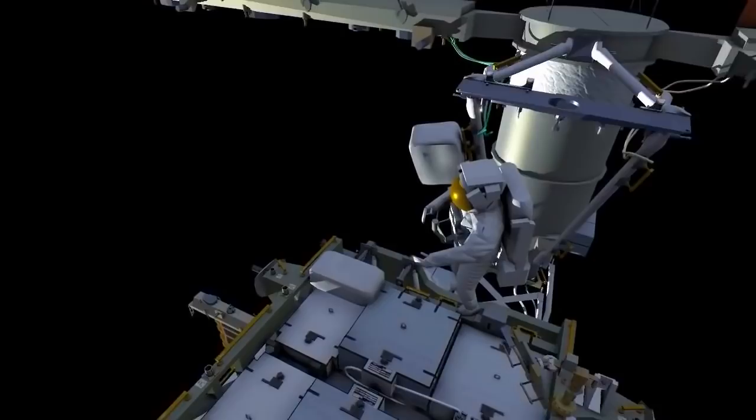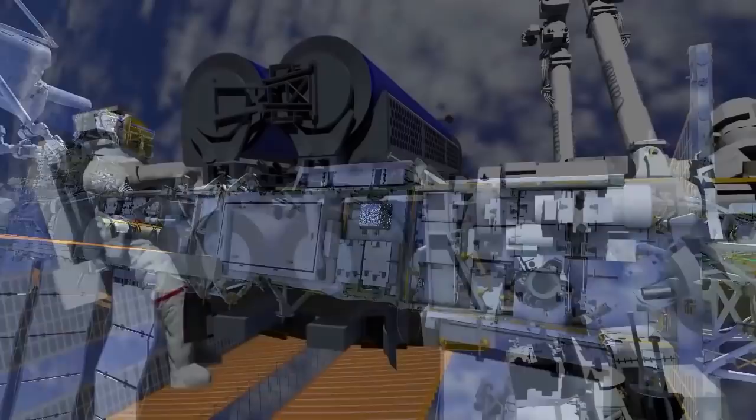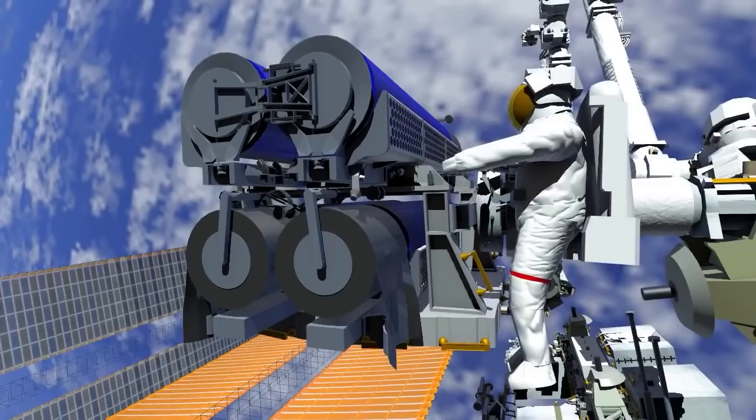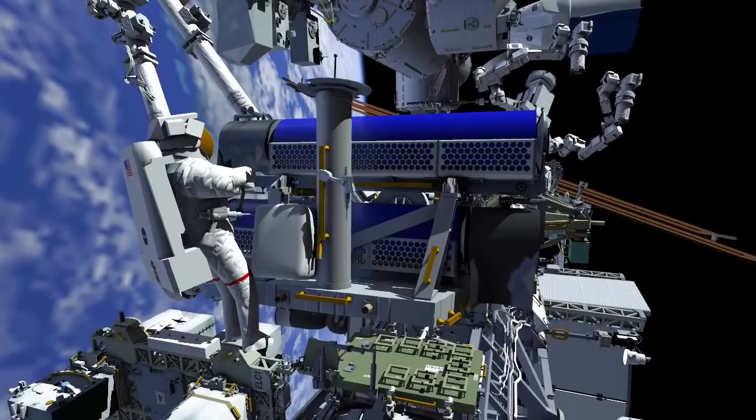Shane retrieves his pistol grip tool and makes his way back inboard to join Thomas. Thomas prepares the release bolts down to the last few turns. Thomas installs one of the handling aids and makes his way back around IROSA.